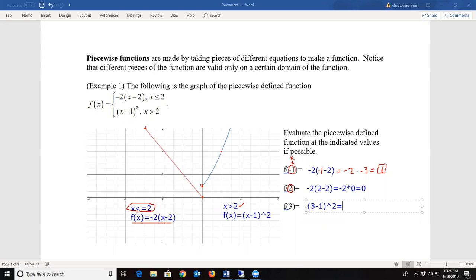3 minus 1 is 2, and 2 squared is 4, just how we thought. The thing to remember is, when we're dealing with piecewise defined functions, the first thing you want to do is find the domain, figure out which function you're using.